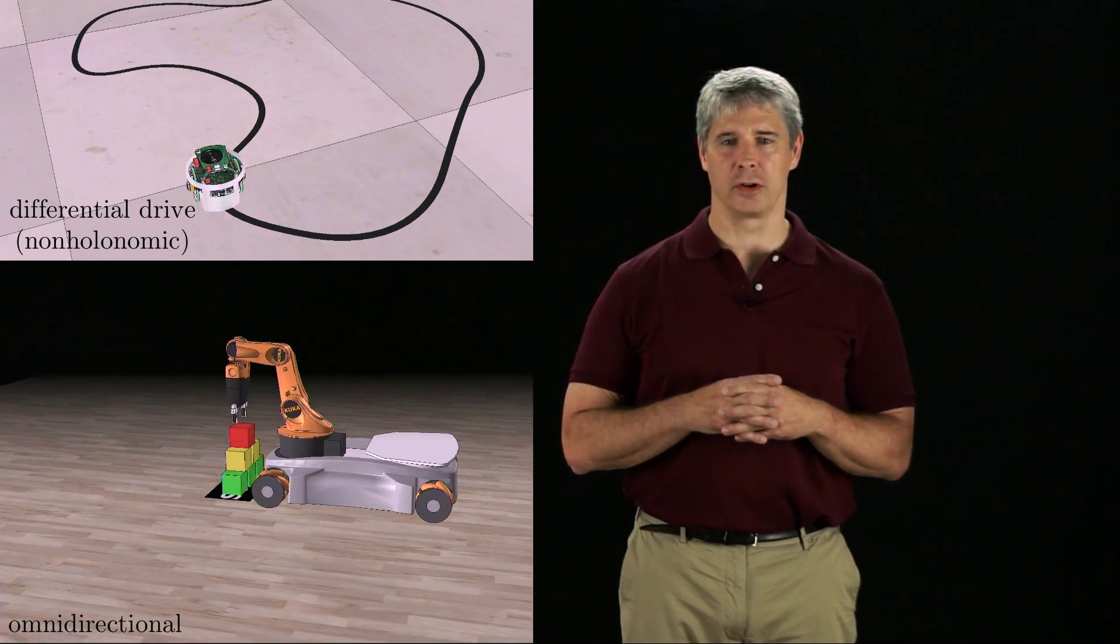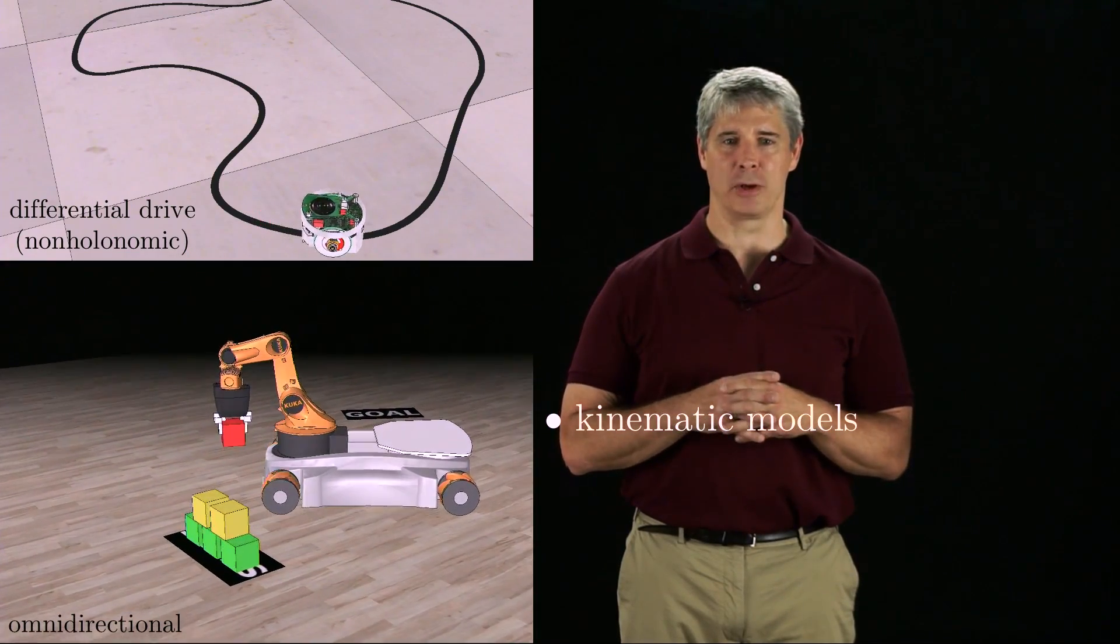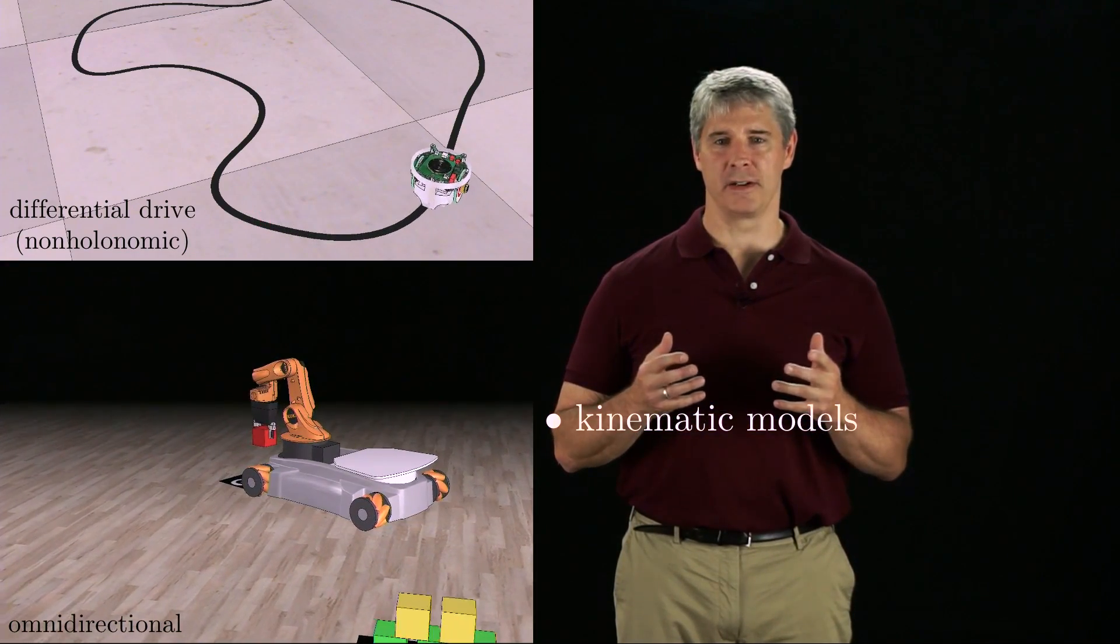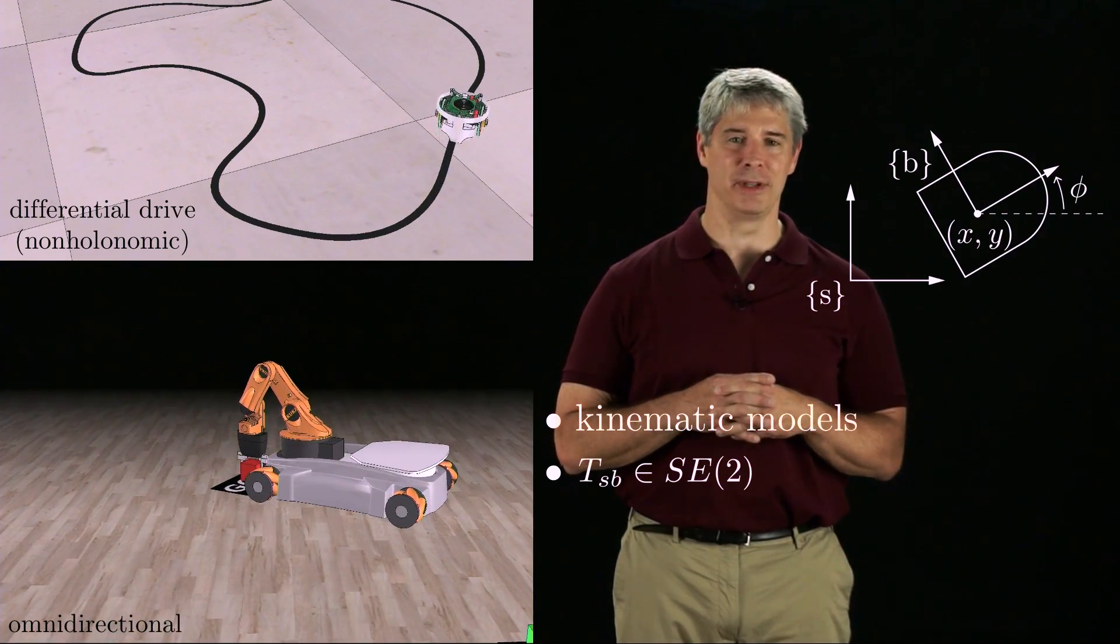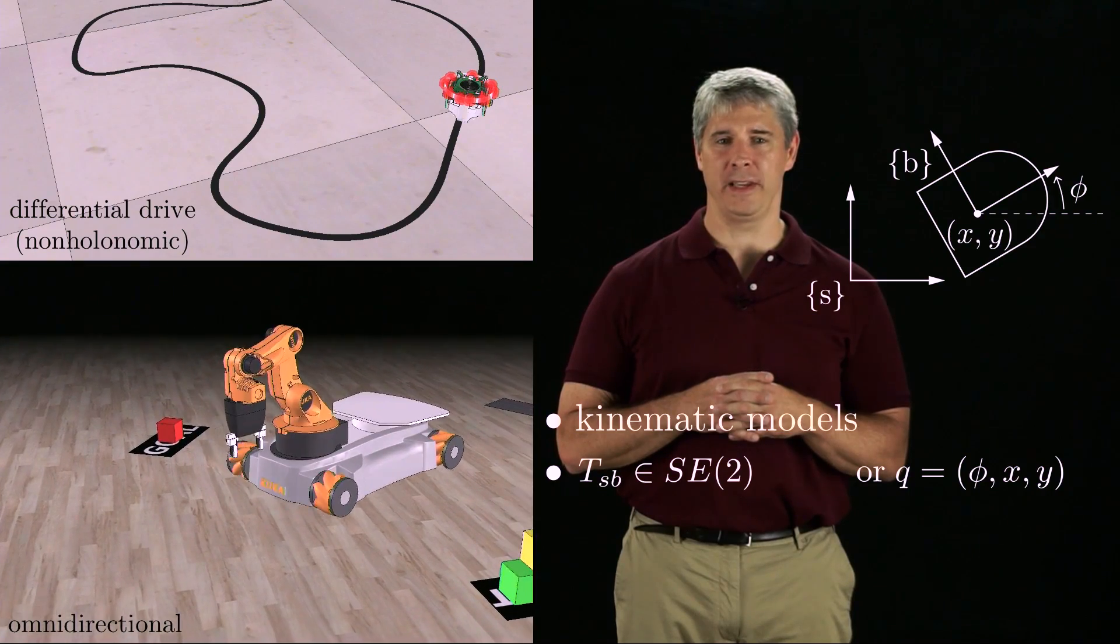In all cases, we assume that we control wheel velocities, not torques, so we have a kinematic model mapping wheel speeds to the chassis velocity. The planar configuration of the robot chassis is written TSB, an element of SE(2), or simply as the vector q equal to phi, x, y.